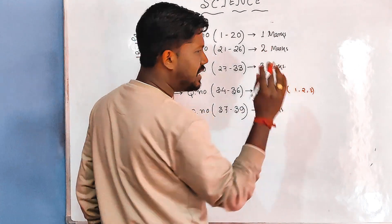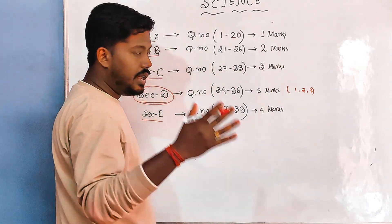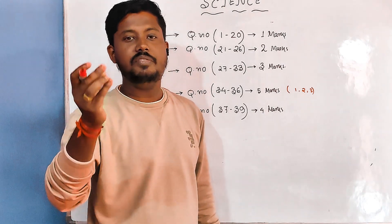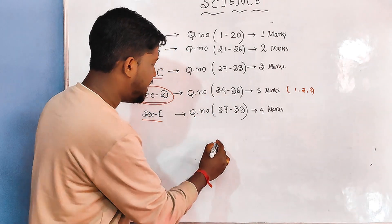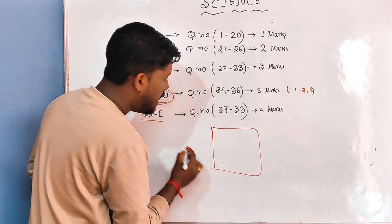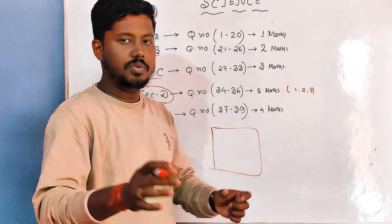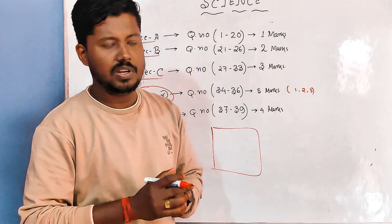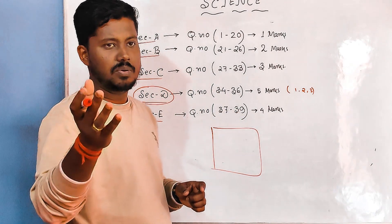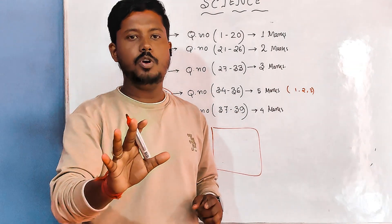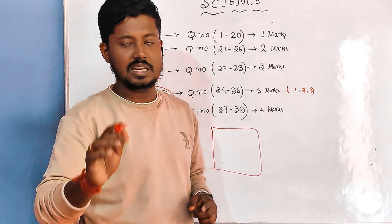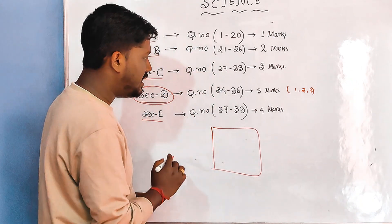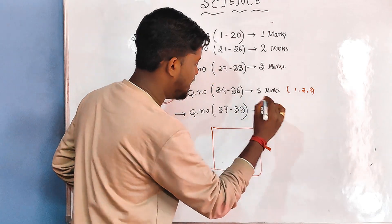A few things you need to maintain. Number one — definitely you are going to get diagrams from physics and biology. Draw them carefully. When you are drawing, draw neatly because examiners will check your diagrams. If your diagram is okay you will get marks. Labeling is definitely a must.